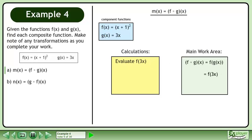Before we can continue, we need to evaluate f. We know that f(x) = (x + 1)², so f(g(x)) = (3x + 1)². The answer is m(x) = (3x + 1)².